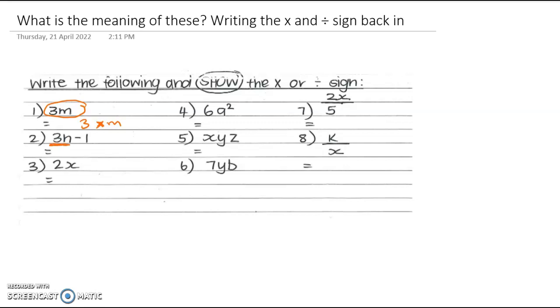So 3n means 3 times n, take away 1. 2x means 2 times x. In here, the a squared means a times a. So we've got 6 times a times a. In the next one, x, y, z means x times y times z. 7yb means 7 times y times b. Now here comes one with multiplication and division. So 2x over 5 is 2 times x divided by 5. And number 8, k over x means k divided by x.